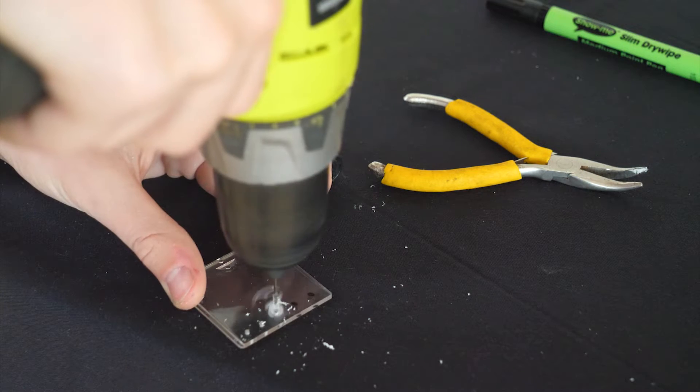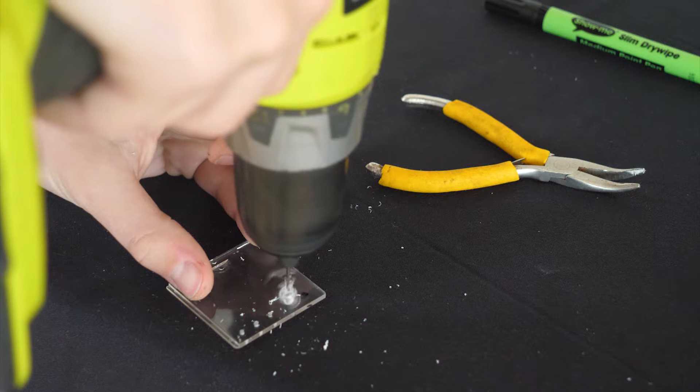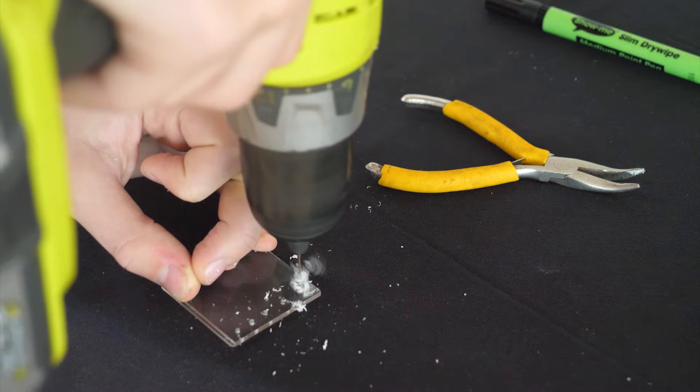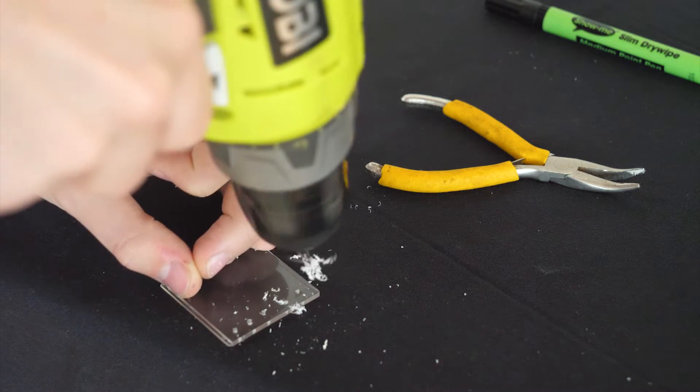However, another modification needs to be made. I need to drill some ventilation holes. Once they were drilled, I also filled the holes with small bits of cotton wool to prevent any ants from escaping, which is a potential hazard with ants this small.